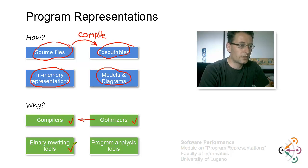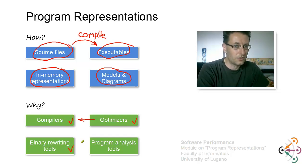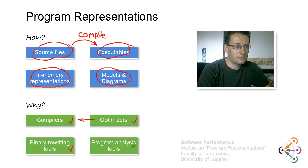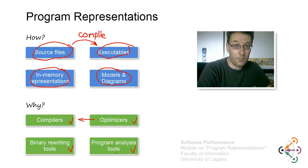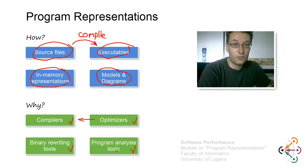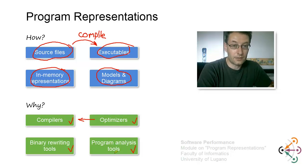Another set of tools that operate on programs are binary rewriting tools — or more broadly, rewriting tools, since you can rewrite source code as well. You could also classify them as program analysis tools. These are tools that analyze programs, for example, to find bugs, to check certain properties, to find memory leaks, or to determine whether programs are secure. There are two types: static ones and dynamic ones.